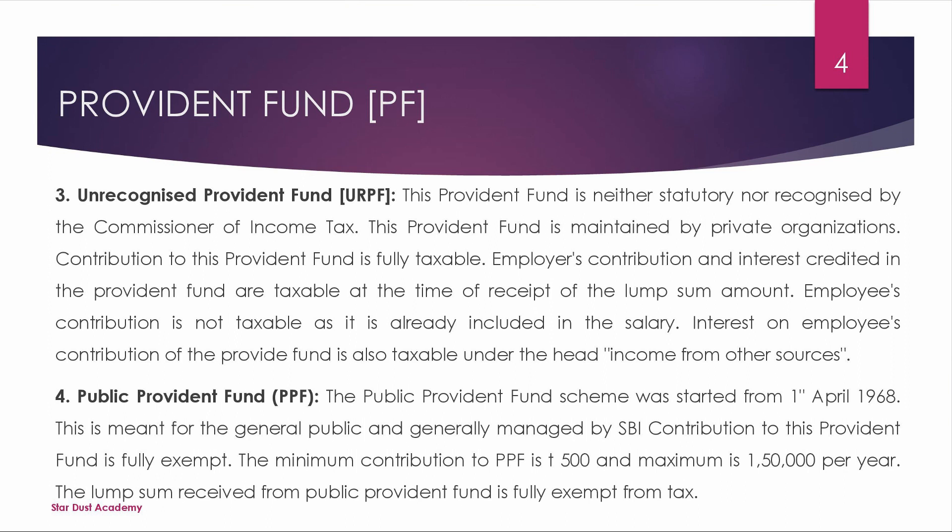Next, Public Provident Fund (PPF) was established on 1st April 1968. The lump sum received from the Public Provident Fund is fully exempt from tax — that is, the lump sum amount we receive is completely exempted. There are 4 types of Provident Funds in total.